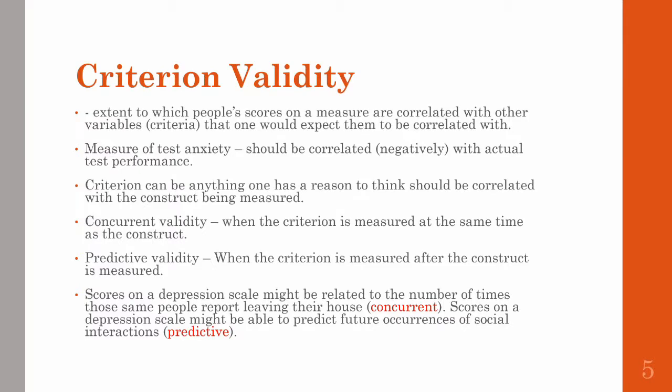Criterion validity is the extent to which people's scores on a measure are correlated with other variables or criteria that you might expect them to correlate with. Say you create a new measure of test anxiety. We know that test anxiety is related to poor performance on tests, so your measure should be negatively correlated with actual test performance — that is, higher scores on your test anxiety measure should be related to lower scores on a given test. The criterion here is used loosely and could include anything you might think would be related to your new measure or construct.